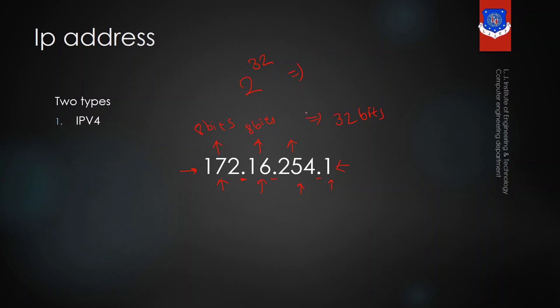So in total it becomes 32 bits in length, which means there are 2 raised to the power 32 IP addresses available worldwide — equal to 4 billion. You may think that is a very large number, but as of 2020 there are 20 billion devices connected to the internet, and that is why IPv4 is not enough and we are shifting to IPv6.